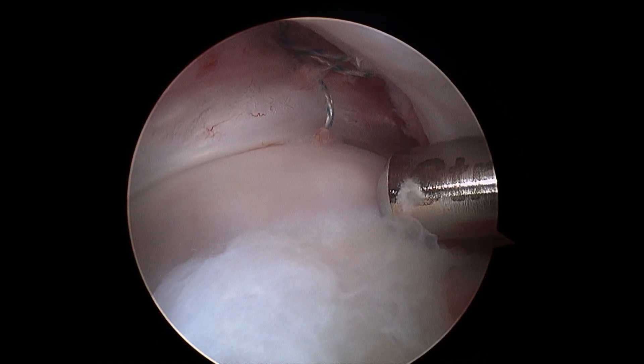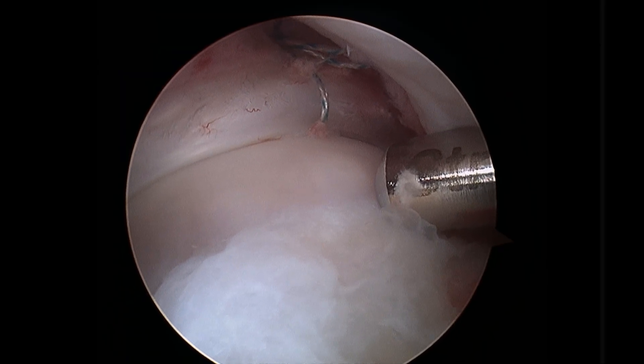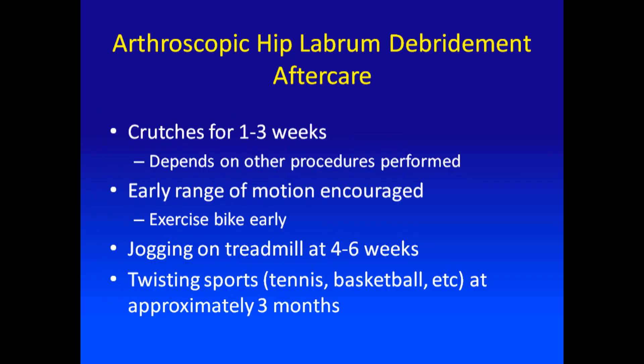Here you can see the completed repair. The femoral head is to the left, and you can see the repair from a different angle in the peripheral space, showing the labrum reattached to the acetabulum. All of these procedures are performed as outpatient surgeries — the patient goes home the same day. Typically they're placed on crutches with partial weight bearing, about 50% of their weight, for one to three weeks, depending on the procedure. Early range of motion is encouraged, and some patients will even get on an exercise bike within those first one to three weeks. Jogging on a treadmill happens at four to six weeks, and twisting sports are limited for three to four months before patients return to that type of activity.